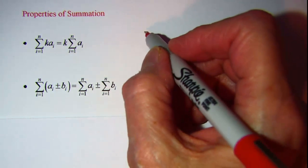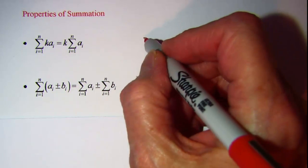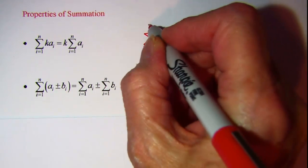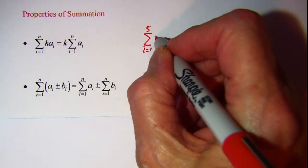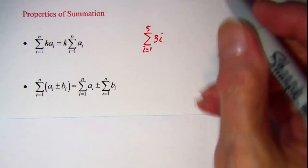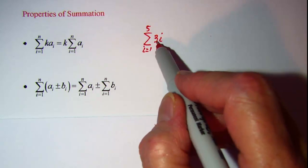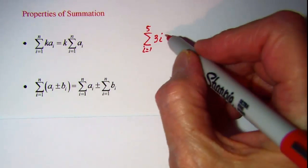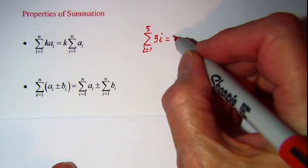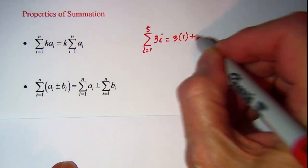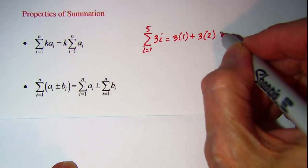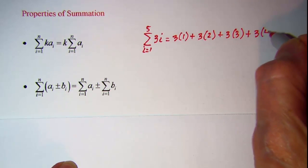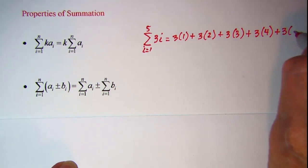To give an intuitive proof of this first property, let's look at the summation as i goes from 1 to 5 of 3i. So in this case k is 3 and then our ith term is just i. Well if we were going to write this out, this would be 3 times 1 plus 3 times 2 plus 3 times 3 plus 3 times 4 plus 3 times 5.